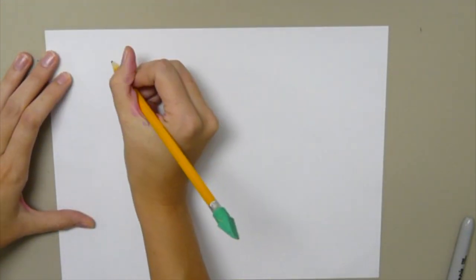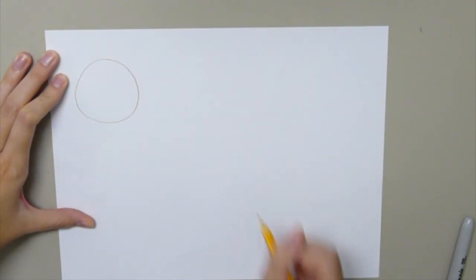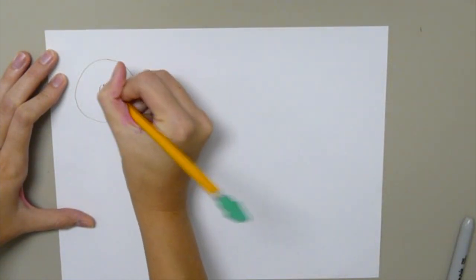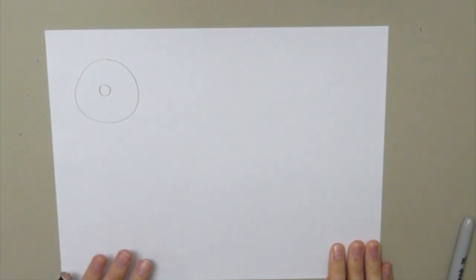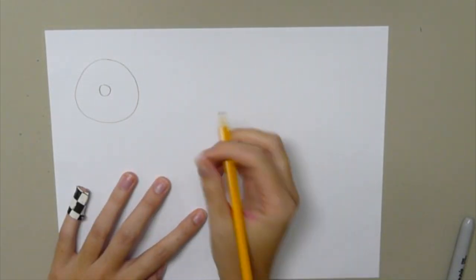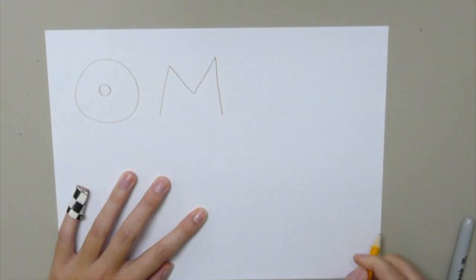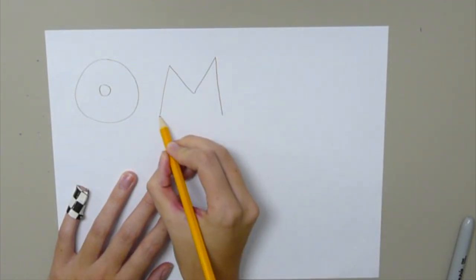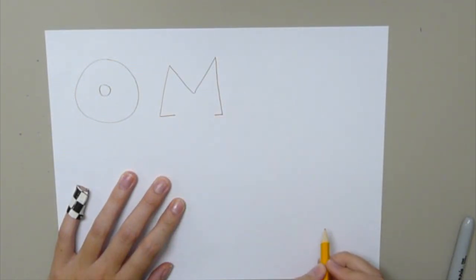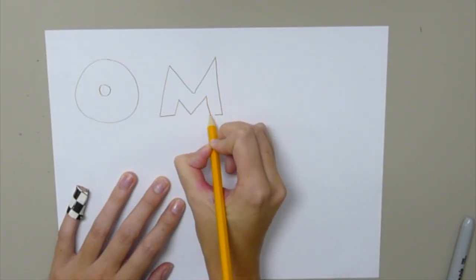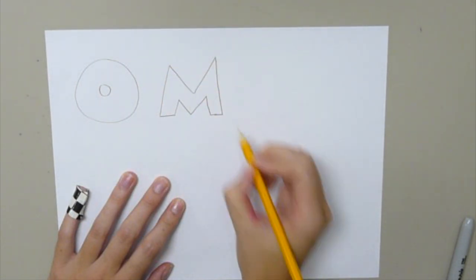Bubble letters are really simple. The letter O is really easy because you make it into a donut. You just add a little O inside of it, and now you have a bubble letter O. Letters like M are really nice because all you have to do is add some lines at the bottom, little feet, and then you follow the top lines.